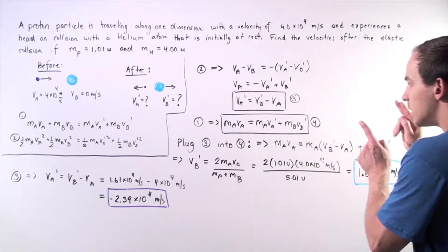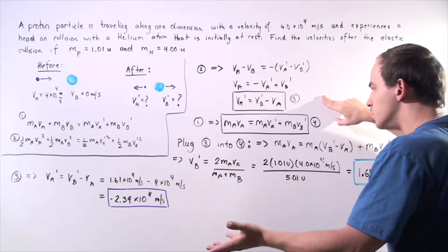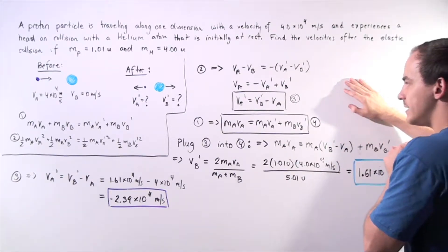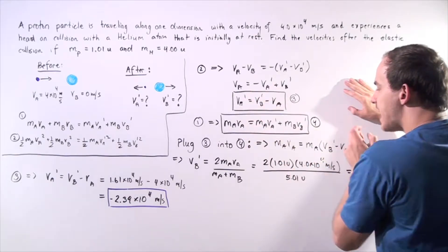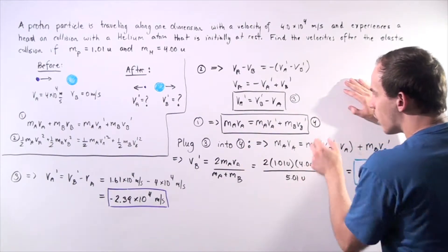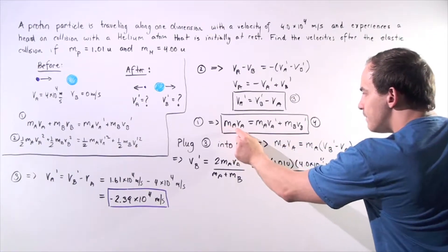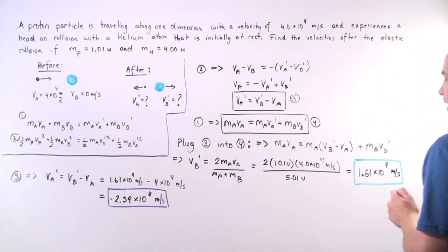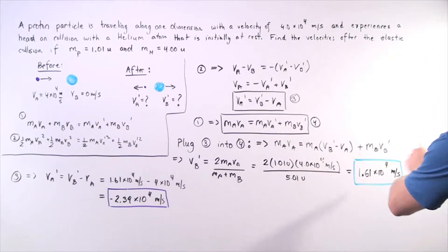Because we have two equations and two unknowns, we can solve for one of the unknowns. To solve for Vb', we substitute equation 3 into equation 4, replacing Va' with Vb' minus Va. This gives: Ma·Va equals Ma multiplied by the quantity (Vb' minus Va) plus Mb·Vb'.